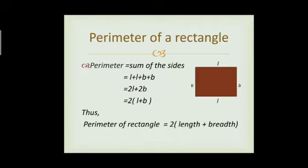Perimeter is the sum of the sides, so it equals L plus L plus B plus B. That means L plus L is 2L and B plus B is 2B. Taking 2 as common, we get 2 times L plus B. So the perimeter of a rectangle is 2 into length plus breadth.